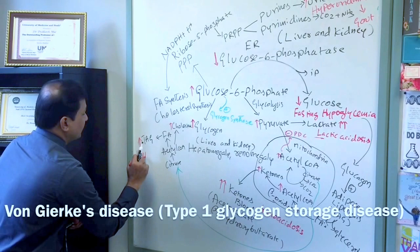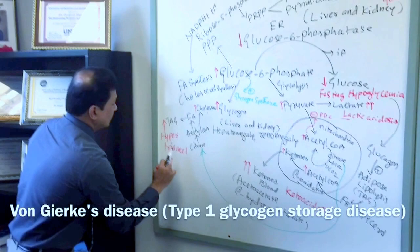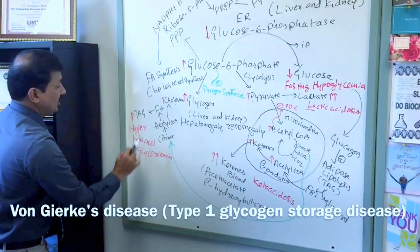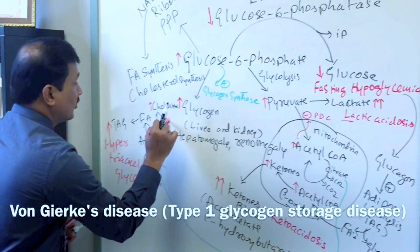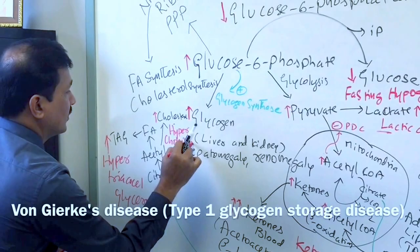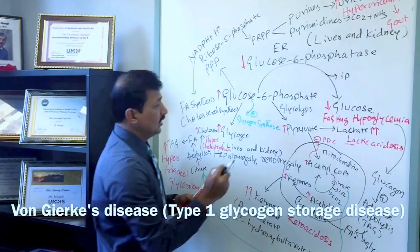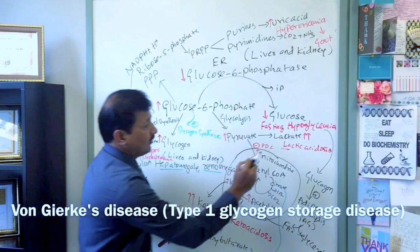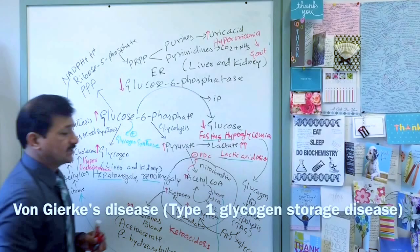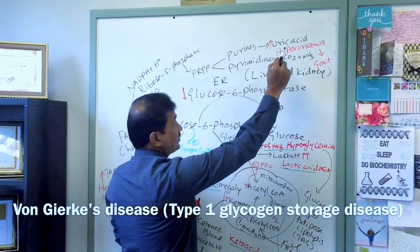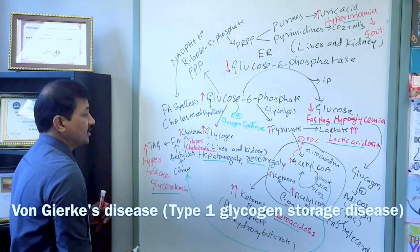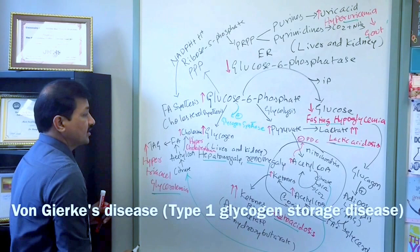That is why in Von Gierke's disease patients there will be hyper-triacylglycerolemia — excess triacylglycerol in the blood — and hypercholesterolemia. All of these are the signs seen in type 1a Von Gierke's disease: hepatomegaly, renomegaly due to glycogen accumulation, lactic acidosis, fasting hypoglycemia, ketoacidosis, hyperuricemia with gout signs and symptoms, hyper-triacylglycerolemia, and hypercholesterolemia — all due to decreased glucose-6-phosphatase activity.